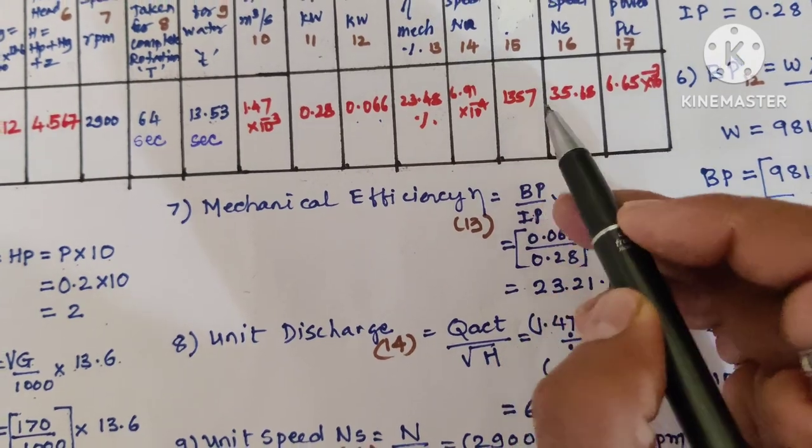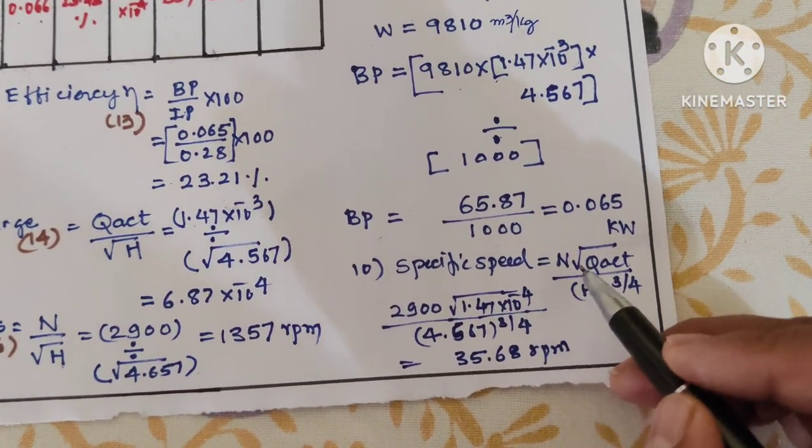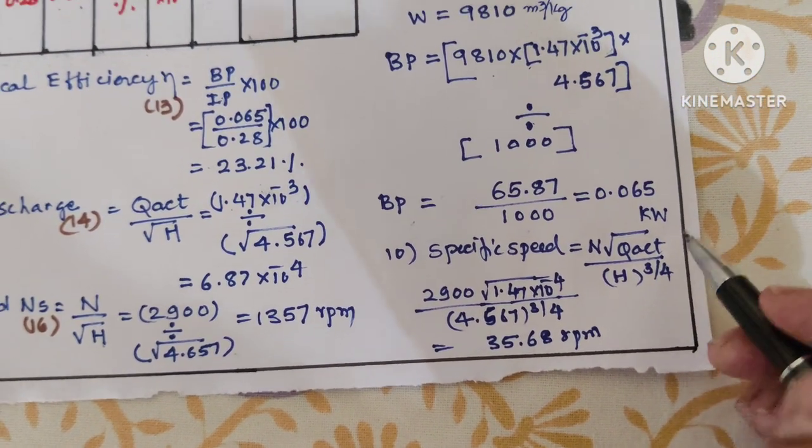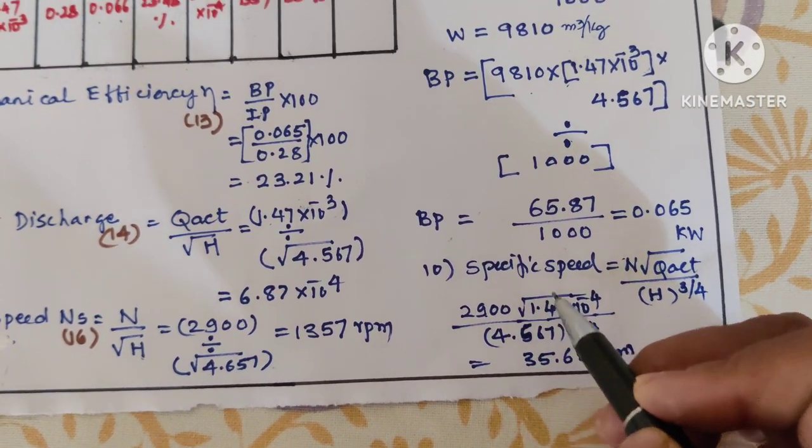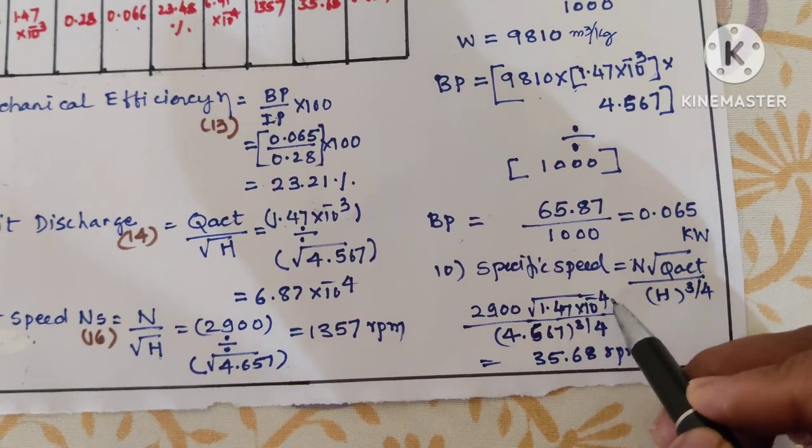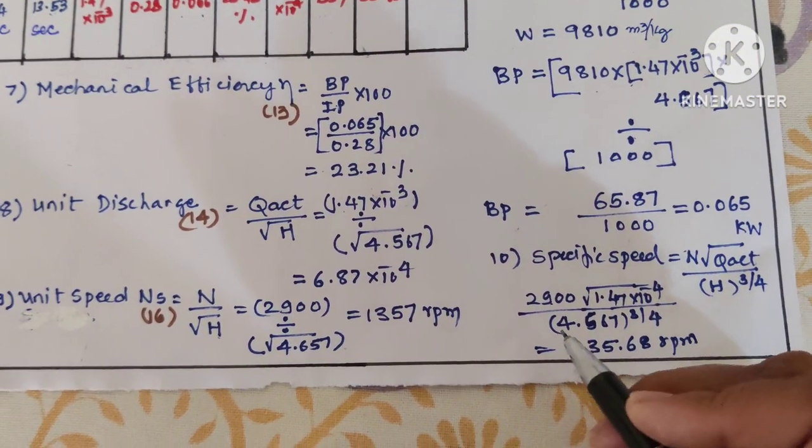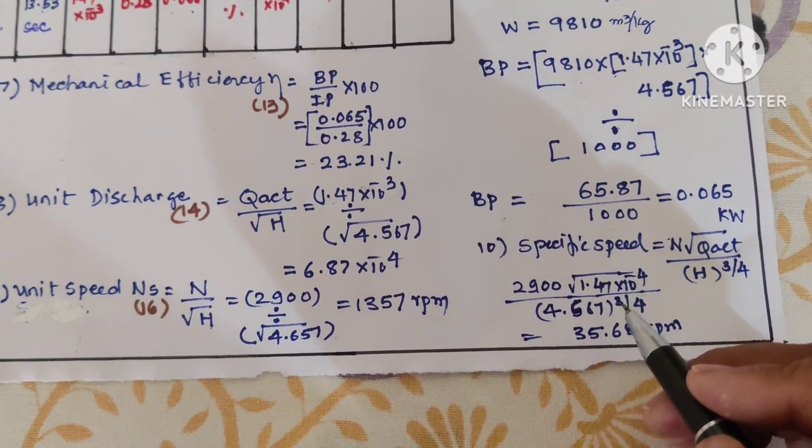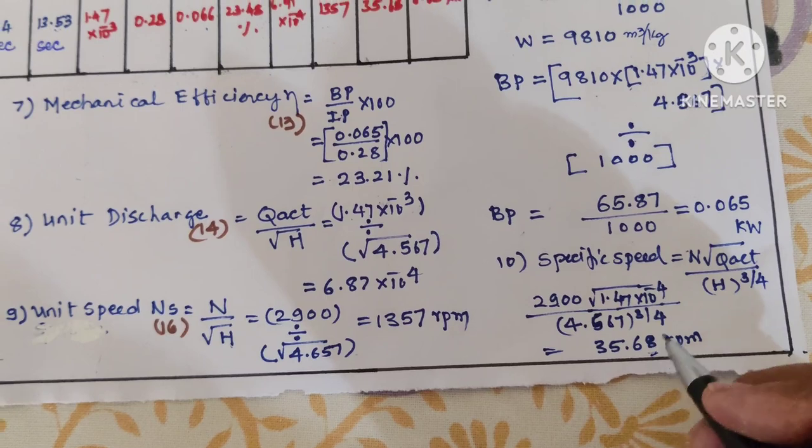Specific speed (Ns): N × √Q actual / H^(3/4). So 2900 × √(1.47 × 10^-4) / 4.567^(3/4). We got answer 35.68.